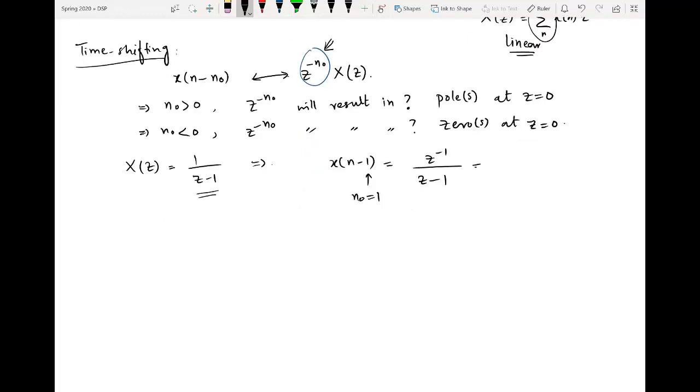You take Z raised to power minus 1 to the denominator. Originally, the Z-transform had only one pole, but in this particular case we have two poles: one at Z equals zero and the other at Z equals 1.